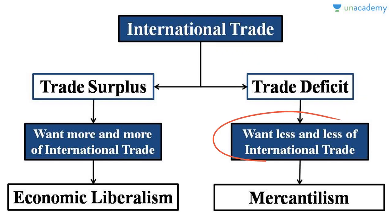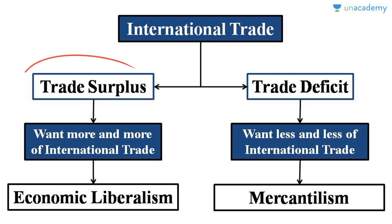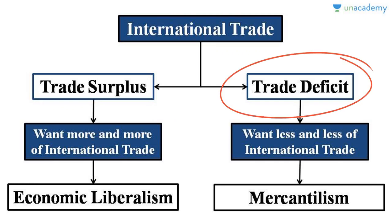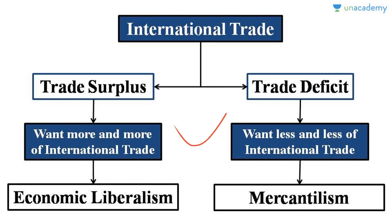But those countries which have continuous trade deficit — for them, international trade is not that good. They will want less and less of it to happen. When a country suffers trade deficit, it has to spend extra money that comes from the revenue base of the country. Countries with trade surplus support international trade and come up with a theory called economic liberalism, while countries with trade deficit come up with a theory called mercantilism.